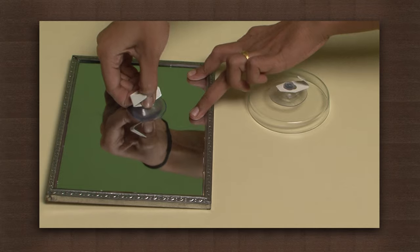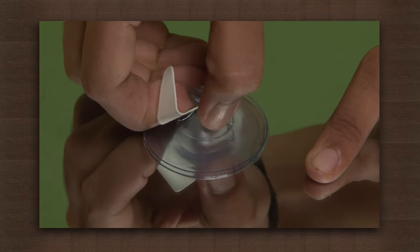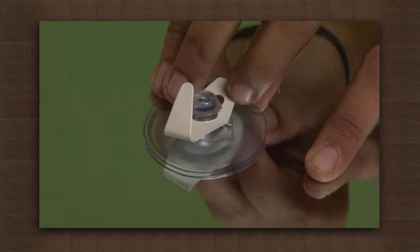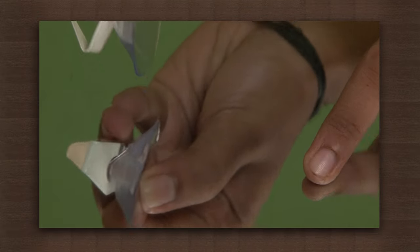Now try to pull out the sucker. It does not come off easily. But you can pull it off by lifting the sucker from one side and allowing the air to get inside.